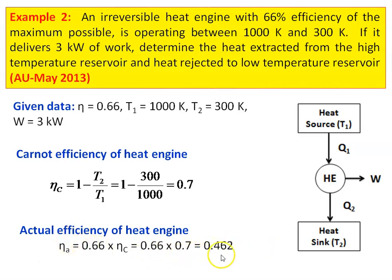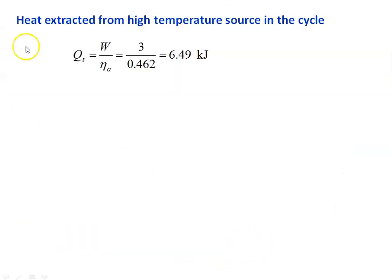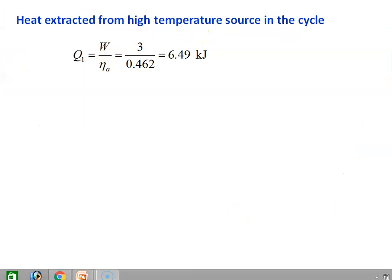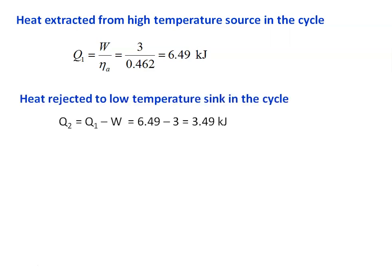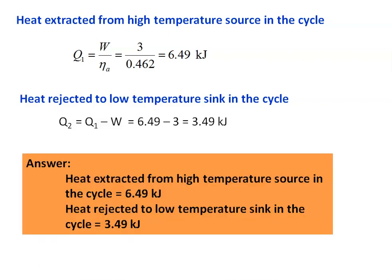The actual efficiency of the heat engine is 0.462. Heat extracted from the high temperature source: Q1 equal to W by eta_A, which is equal to 3 by 0.462 equal to 6.49 kilojoules. Heat rejected to the low temperature sink: Q2 equal to Q1 minus W, which is 6.49 minus 3 equal to 3.49 kilojoules. So the heat extracted from the high temperature source is 6.49 kilojoules and heat rejected to the low temperature sink is 3.49 kilojoules.